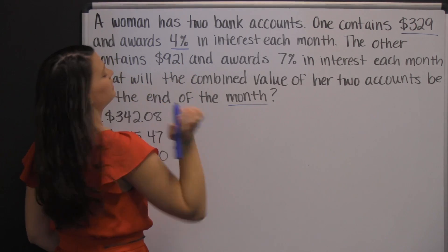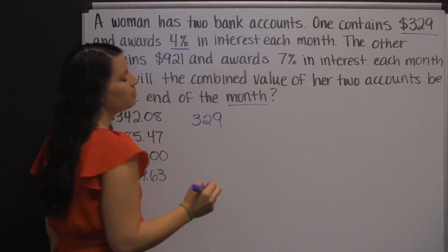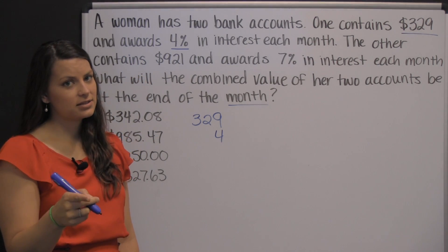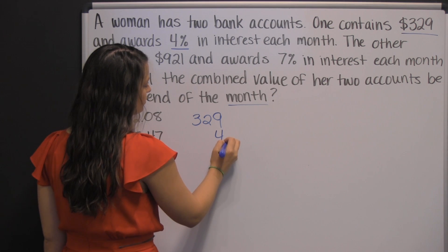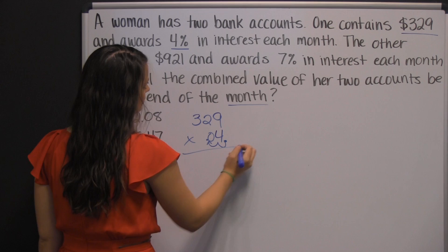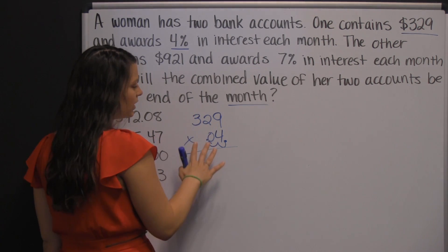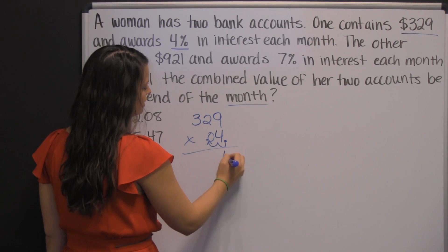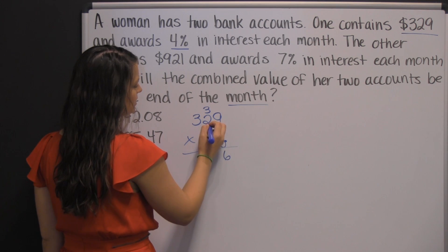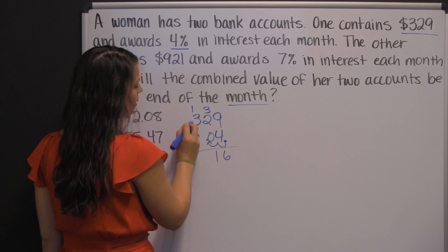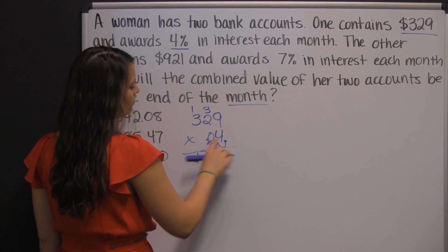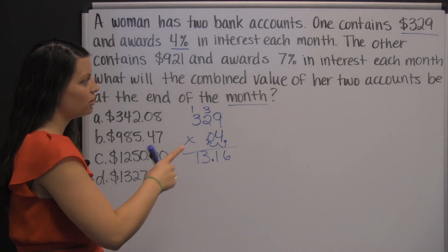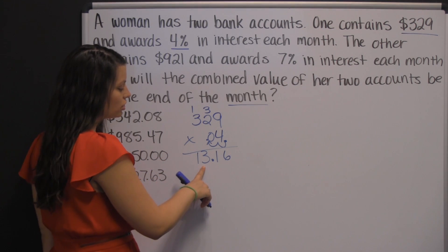To find how much interest she has, you take her $329 and multiply it times 4%. But since we don't multiply by percents, you have to change that percent to a decimal by moving the decimal two places to the left. This gives us how much interest she earned on that account in that month. 4 times 9 is 36. 4 times 2 is 8, plus 3 is 11. 4 times 3 is 12, plus 1 is 13. There are two numbers behind the decimal, so your answer should have two numbers behind the decimal. So in that first account where she had $329, she earned $13.16.